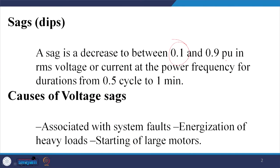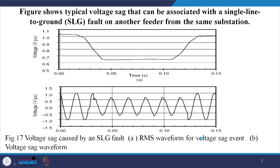Now we will talk about sag and dips. We have already defined sag; now we shall elaborate on different kinds of sags. Sag is a decrease of voltage between 0.1 to 0.9 per unit in RMS value at power frequency, during a period of at least 0.5 cycle and up to 1 minute. If it is longer than 1 minute, it can be considered an interruption. The causes of voltage sag are associated mainly with faults, energization of heavy loads, and starting of large motors, since the starting current of an induction motor is very high.